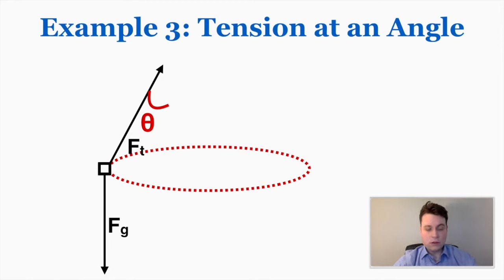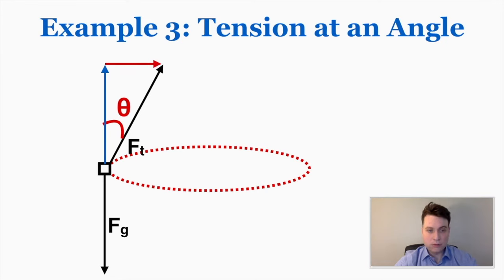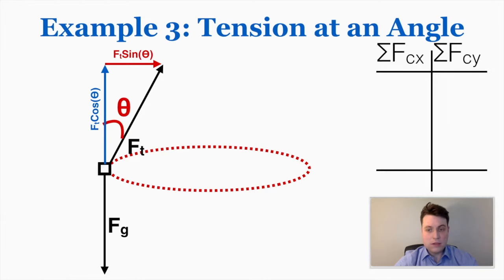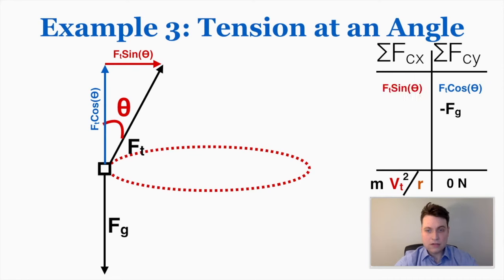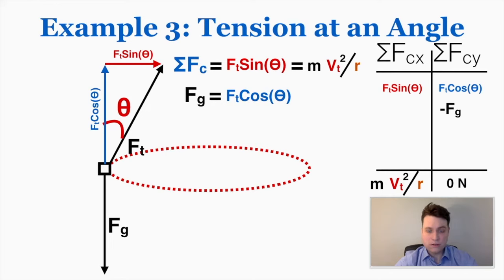Breaking the force of tension into its y component (tension times cosine) and x component (tension times sine), and applying the force table: in the x direction the net force equals mv squared over r (the centripetal force), and in the y direction the net force equals zero. So tension times cosine and the force of gravity add to zero in the vertical direction, and tension times sine equals mv squared over r in the horizontal direction. You can use either equation to find missing variables depending on the information given.